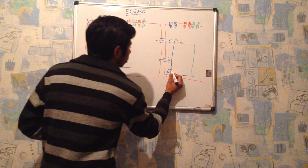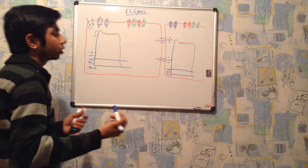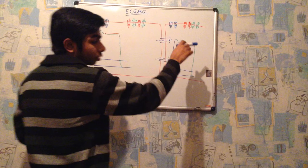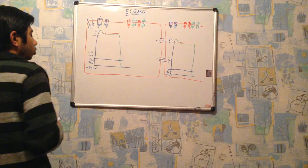So I hope this concept is clear — how action potential is moving inside the cardiomyocyte and how action potential is moving from one cardiomyocyte to another. This process will repeat again and again from one cardiomyocyte to the adjacent cardiomyocyte. Let me summarize this action potential topic.